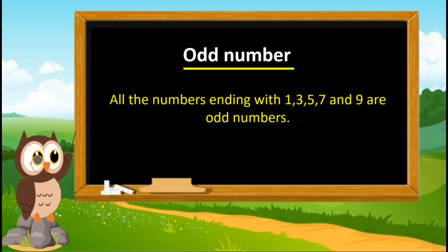All the numbers ending with one, three, five, seven, and nine are odd numbers.